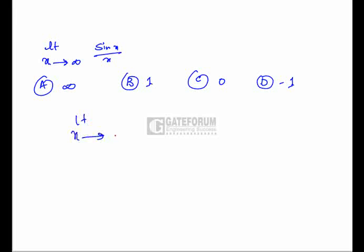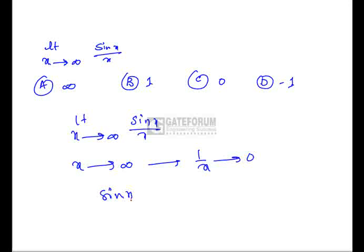We find the value of the limit sin x by x if x is tending to infinity. Now as x is tending to infinity we know that 1 by x tends to 0. Hence sin x by x also tends to 0. That is option C.